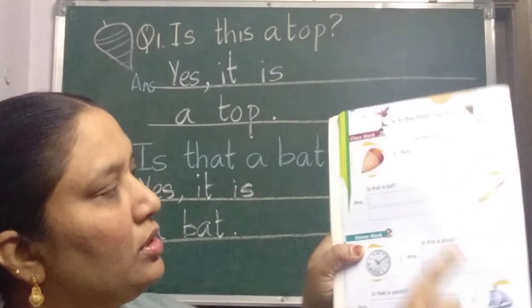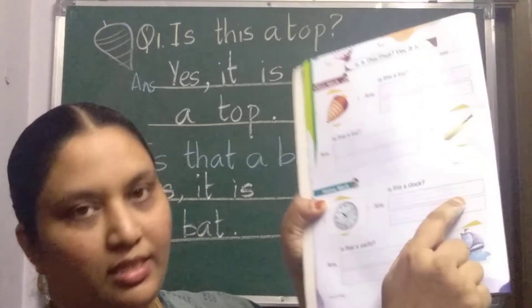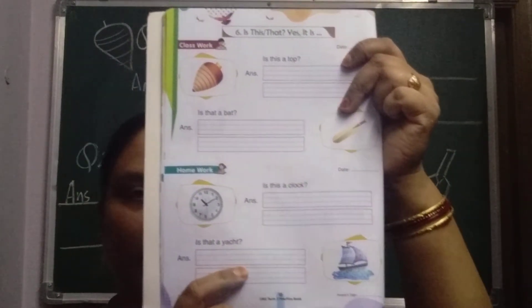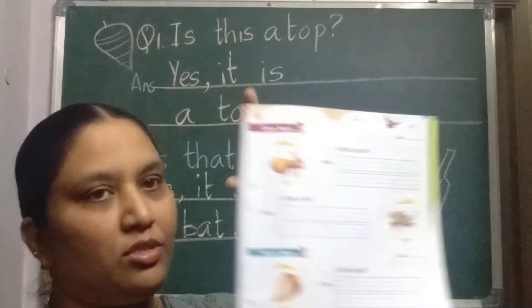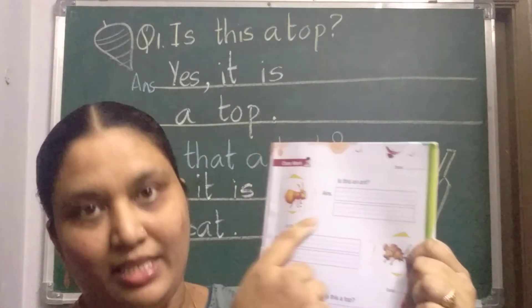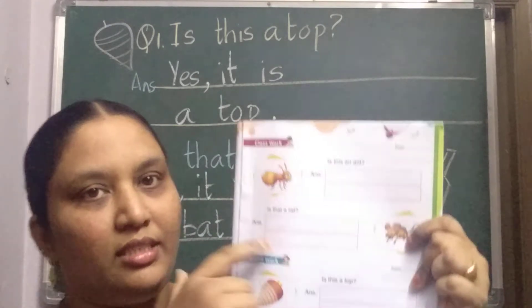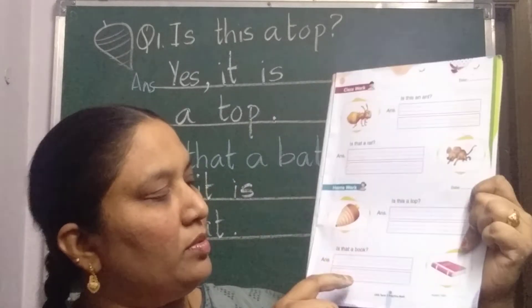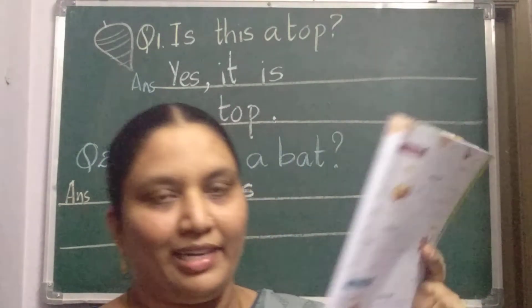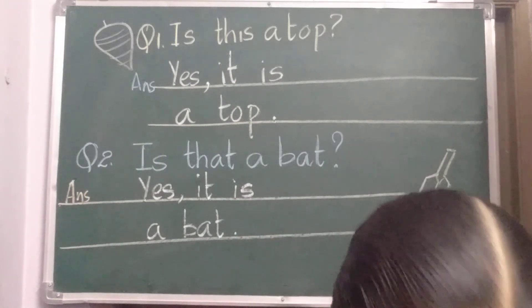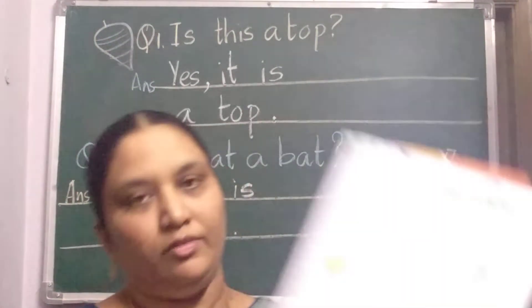Is this a clock? Yes, it is a clock. Is that a yacht? Yes, it is a yacht. Next page also the same — like that, only questions. Is this an ant? Yes, it is an ant. Is that a rat? Yes, it is a rat. Is this a top? Yes, it is a top. Is that a book? Yes, it is a book. So two pages in the practice book — page number 12 and 13 you should do. And try to read your course book, page number 15.